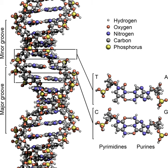If they are twisted in the opposite direction, this is negative supercoiling, and the bases come apart more easily. In nature, most DNA has a slight negative supercoiling that is introduced by enzymes called topoisomerases. These enzymes are also needed to relieve the twisting stresses introduced into DNA strands during processes such as transcription and DNA replication.